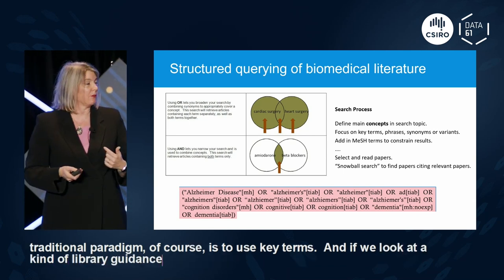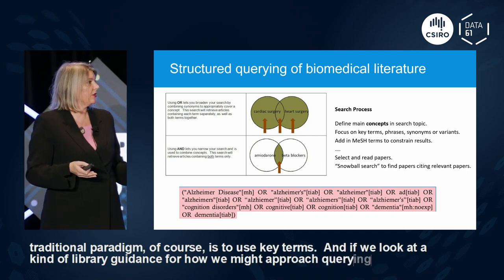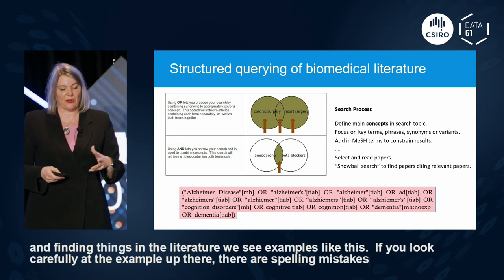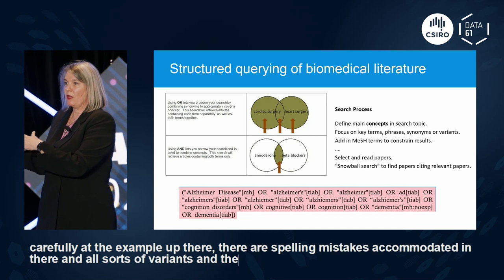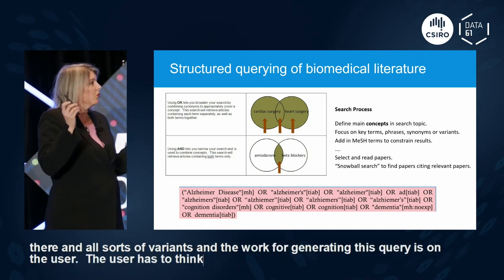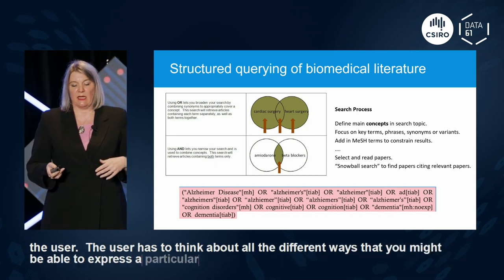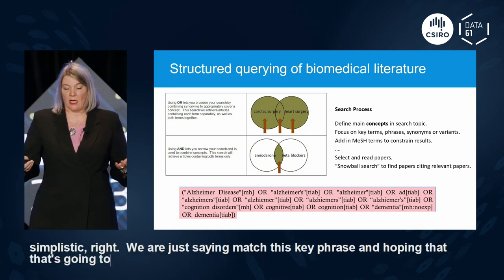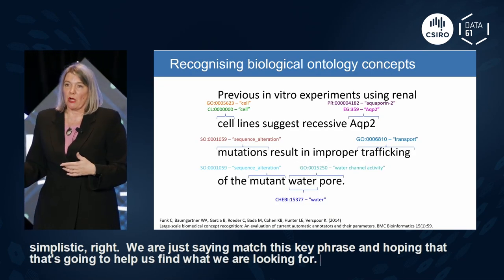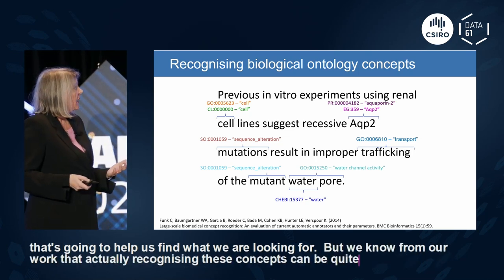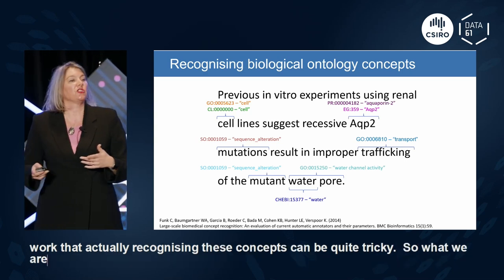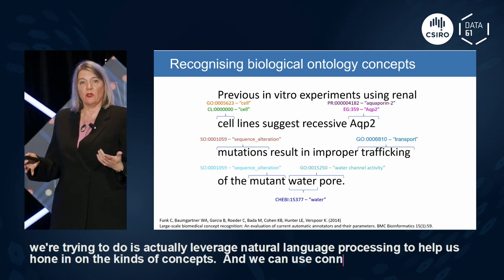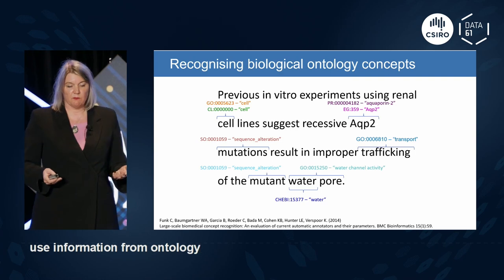The traditional paradigm is to use key terms. If we look at library guidance for querying the literature, we see queries that require the user to think of all the different ways a concept might be expressed in text — including spelling variants. The work is entirely on the user, and it's actually quite simplistic: just matching key phrases. But we know that recognizing these concepts can be quite tricky, so we're trying to leverage NLP to hone in on concepts using context and ontology information.